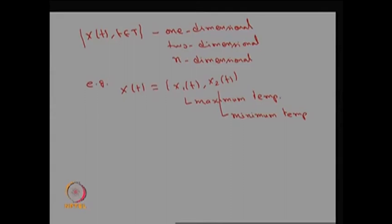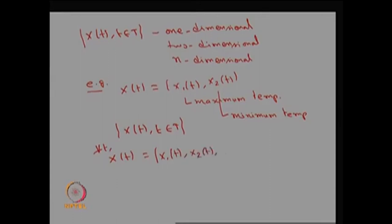For a fixed t, you have one random vector X(t), and this random vector over T forms a stochastic process — this is a two-dimensional stochastic process. In general, you can define an n-dimensional stochastic process where for every t you have a random vector X(t) = (X1(t), X2(t), ..., Xn(t)), which is an n-tuple in which each element is a random variable for fixed t.